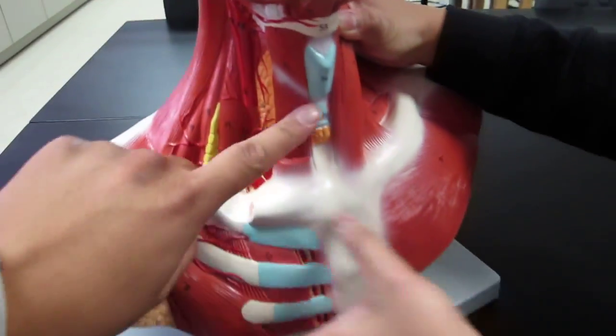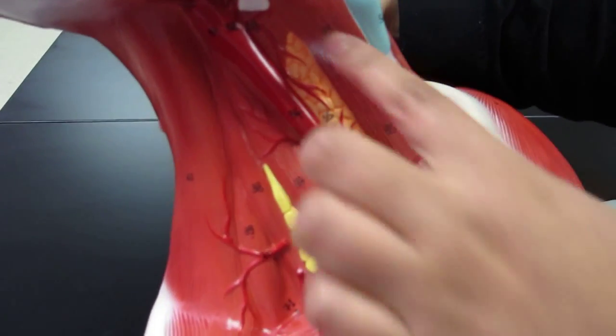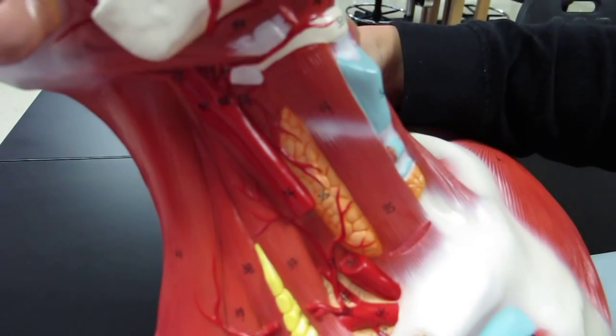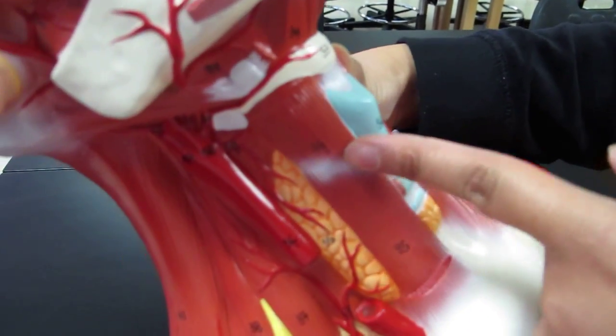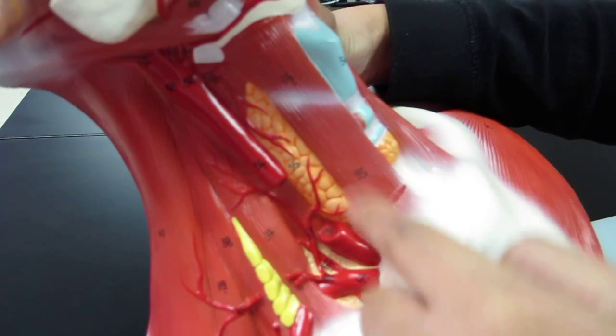And then thirty-six is called the thyrohyoid, thirty-six is the thyrohyoid. Thirty-five is the sternothyroid.